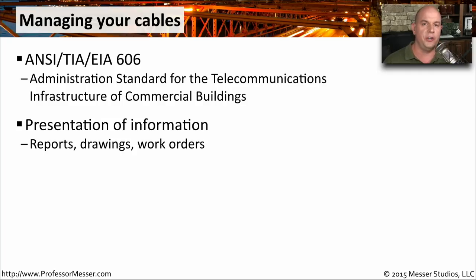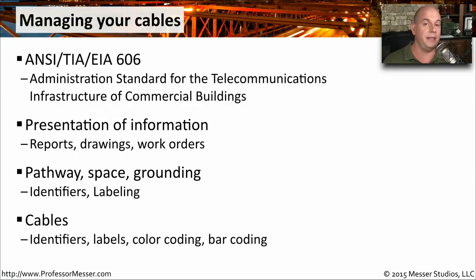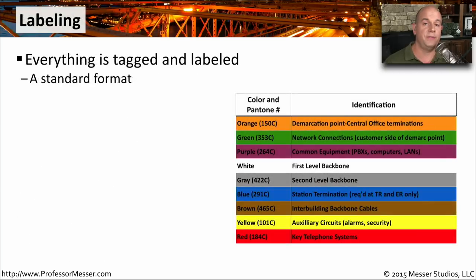How should the information be presented in reports, drawings, and work orders? It also discusses pathways and spaces and how things are grounded. You want to be sure that you have the proper identifiers and labeling on all of these. Should cables be different colors? How should the labeling work, and what color should you use for the different connections in your network? Of course, you don't have to use the ANSI standard, but it's a good idea of how you could start with labeling in your environment.